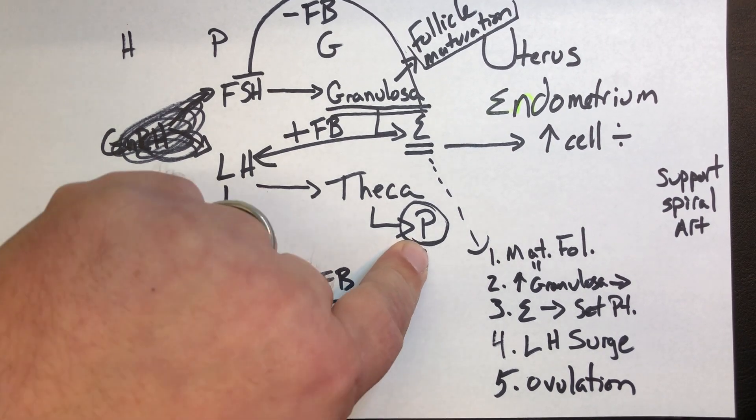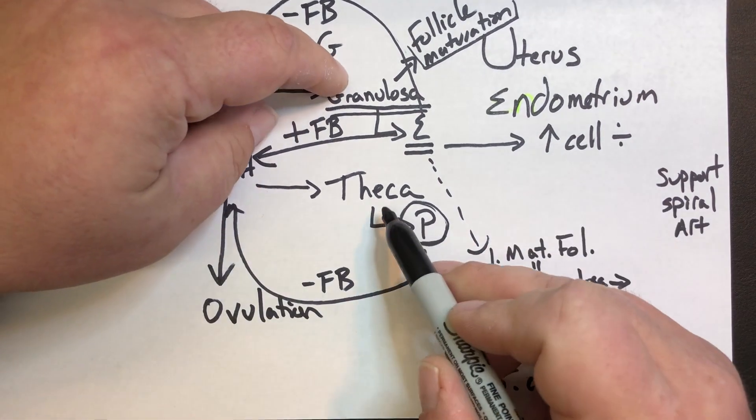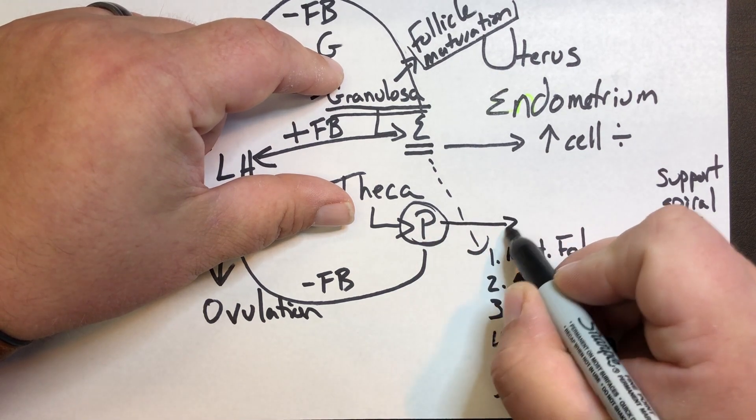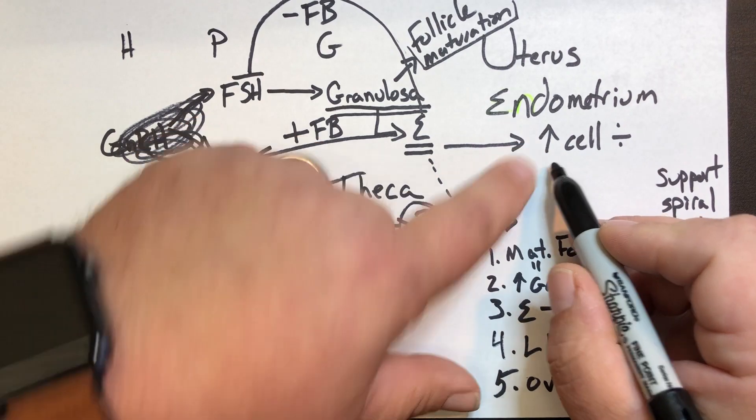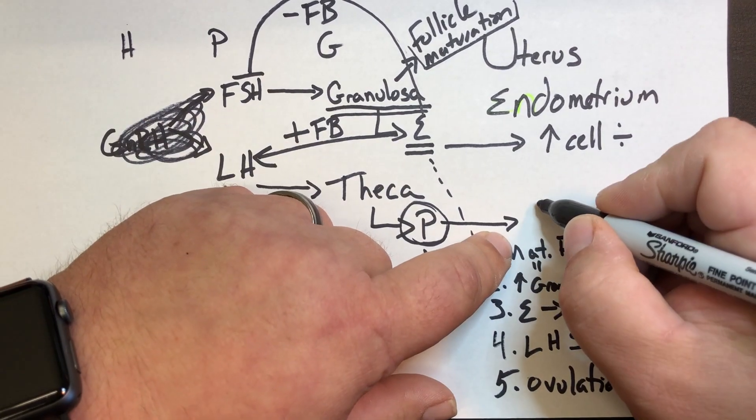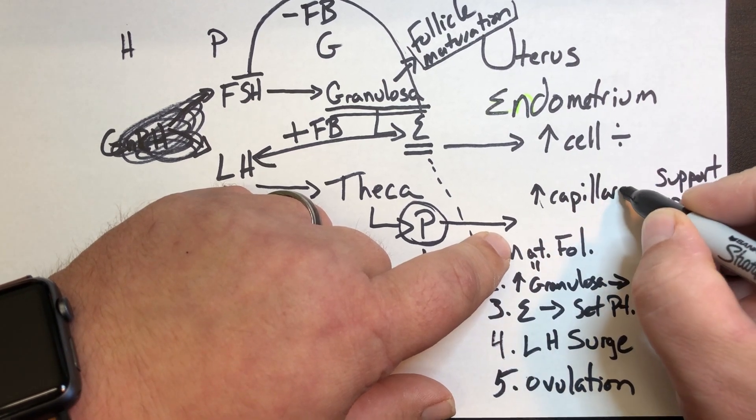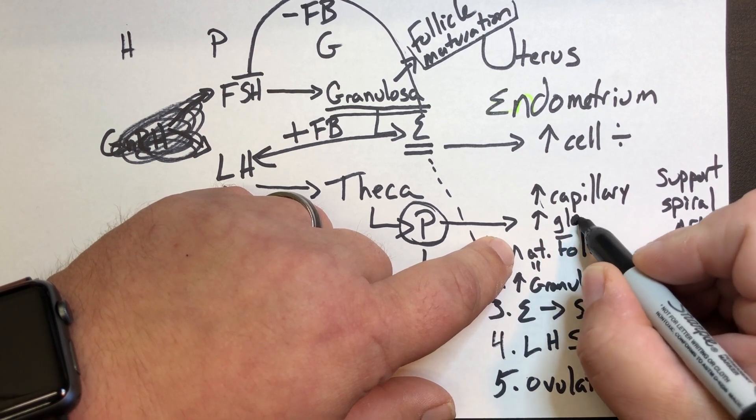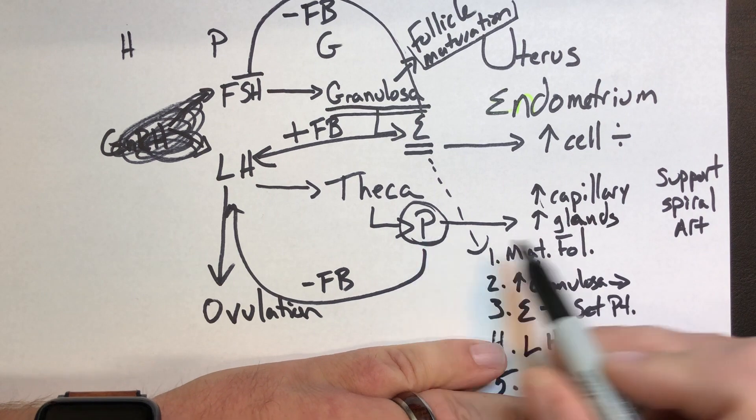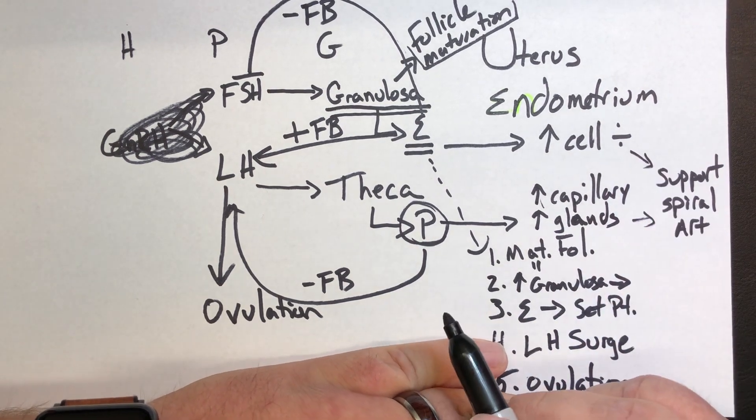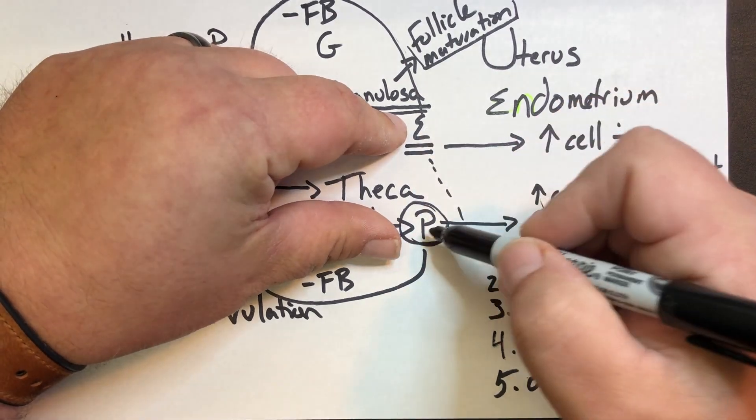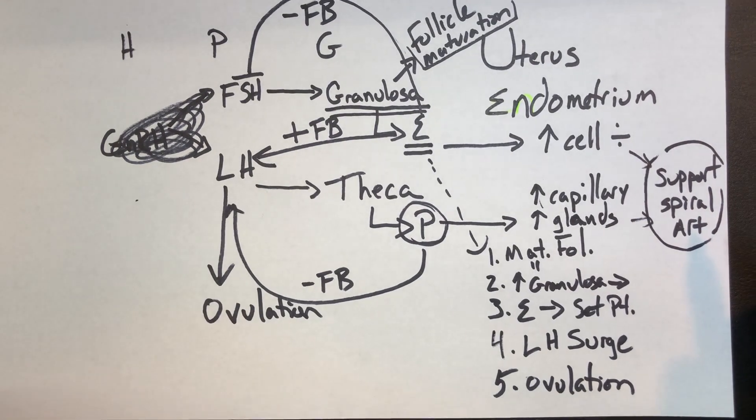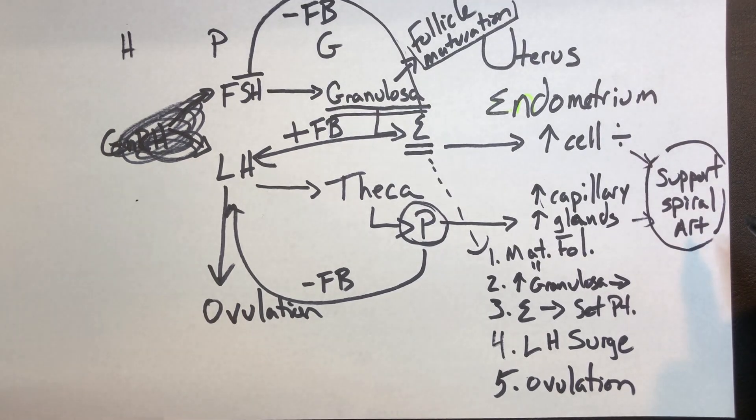Post-ovulation, high levels of progestin. What we would see is that the granulosa and theca collapse on themselves and form the corpus luteum. And what we see during this phase is we still see estrogen cell division. But what we see is an increase in capillary content. And we see an increase at the same time in glands and gland activity. Also progestin supports the spiral arteries. So at the end of the menstrual cycle, as estrogen and progestin drops, we lose support for the spiral arteries. And that's what's going to lead to the resetting of the menstrual cycle. And we're back at the beginning. And that's where we see menstruation.